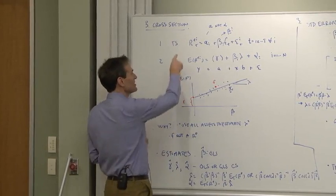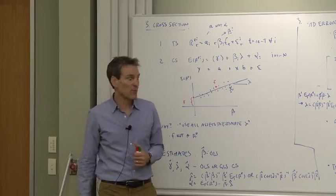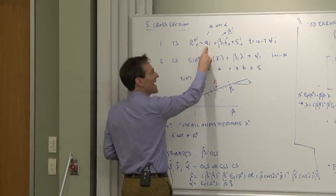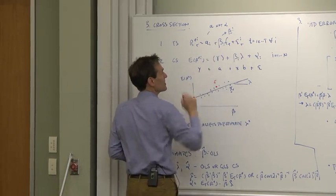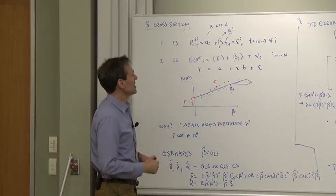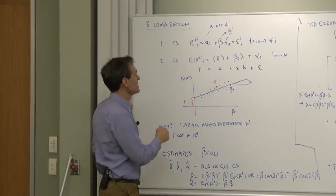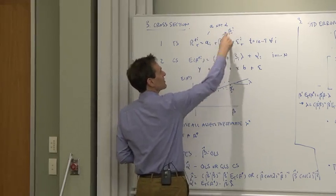Step one, run the time series regression, just like we did before. So return - I'm using A, not alpha, for a reason - beta on the factor plus the error term. So you run that each time, over time for each asset, and you use this to construct the beta. That's the point.